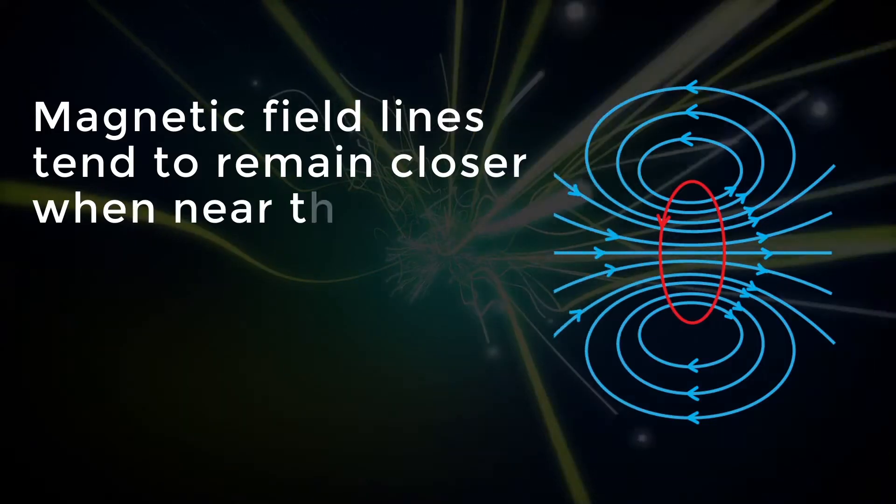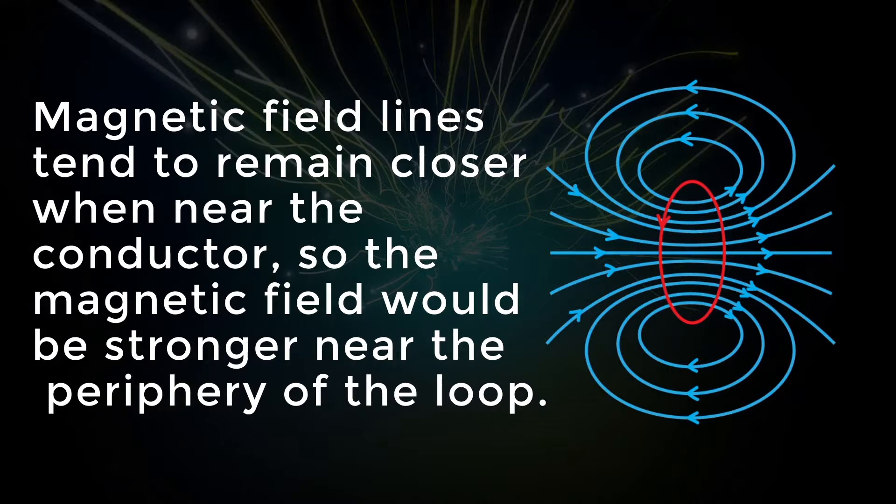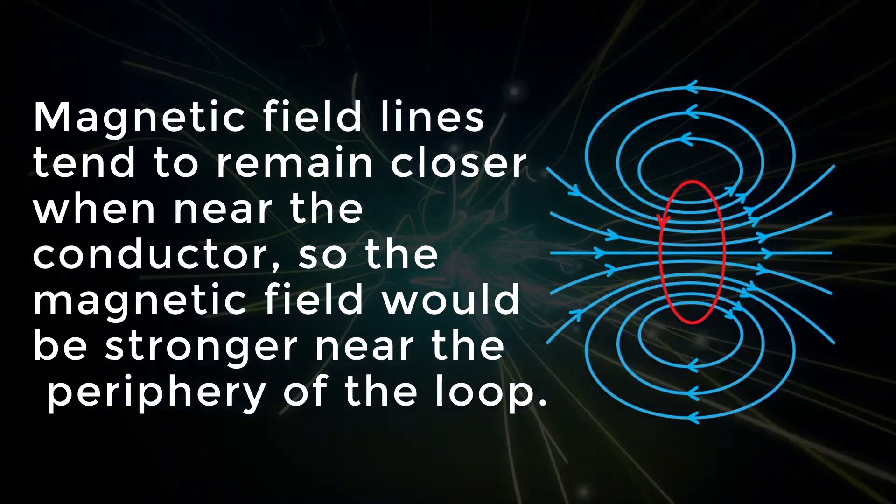Since magnetic field lines tend to remain closer when near the conductor, so the magnetic field would be stronger near the periphery of the loop.